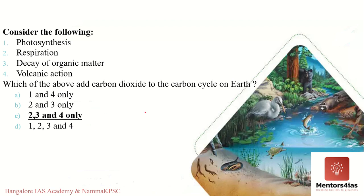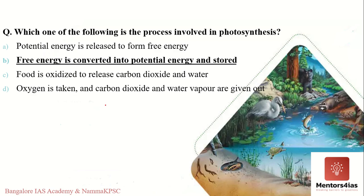We have covered water cycle, carbon cycle, and oxygen cycle; nitrogen cycle will be taken up in the next video. Here are some example questions. Consider the following: photosynthesis, respiration, decay of organic matter, and volcanic action — which of these add carbon dioxide to the carbon cycle on earth? Photosynthesis is by producers where they make use of carbon dioxide, so it does not add CO2. Respiration releases carbon dioxide. Decay of organic matter also releases carbon dioxide. Volcanic activity also releases carbon dioxide. Therefore the answer is options 2, 3, and 4.